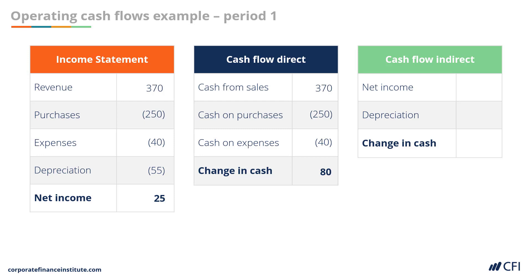Now that the income statement is finished, we can prepare the cash flow statement using the indirect method. We start by taking the net income of $25,000 from the bottom of the income statement, then adjust for any non-cash expenses such as depreciation, which we add back at $55,000. In this simplified example there were no changes in working capital, so the only adjustment is adding back depreciation. The resulting net change in cash using the indirect method is $80,000 — the same result as the direct method.